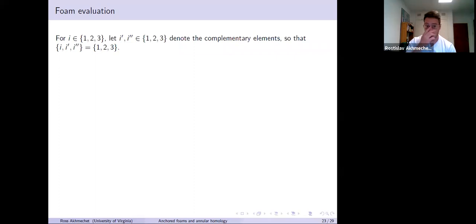Another piece of notation: if you have I in the set one, two, three, I'll let I prime and I double prime denote the complementary, the two complementary elements, so that together these three elements form the full set. The order is irrelevant. So we're going to define an evaluation here. It lives in a three variable polynomial ring.